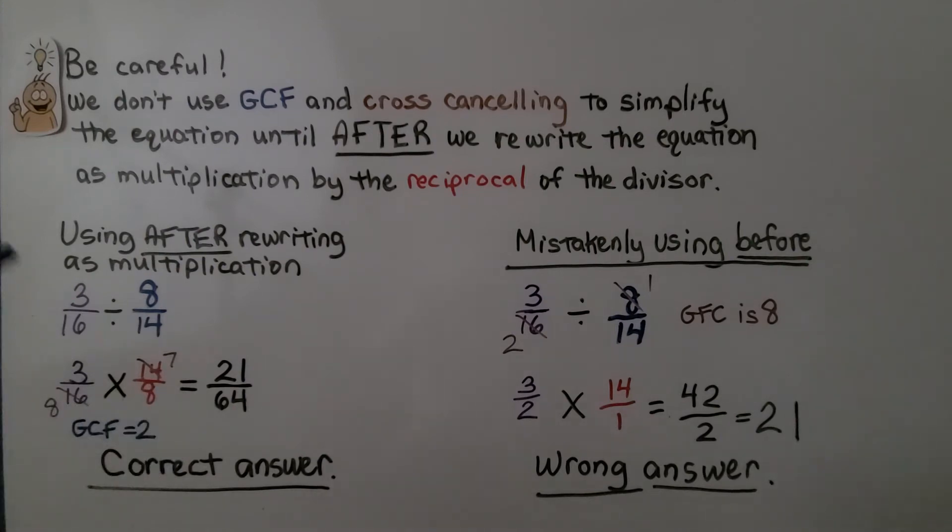So we have 3 16ths divided by 8 14ths. We change it to multiplication and then flip this around to be the reciprocal. Now we use the GCF in cross canceling. We have a 14 and a 16. They have a 2 as a factor in common.